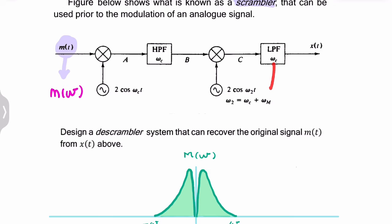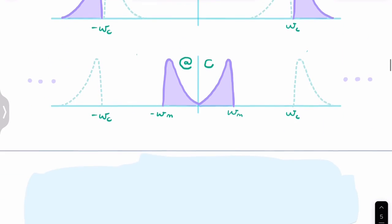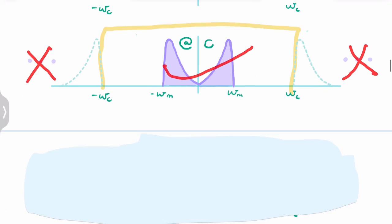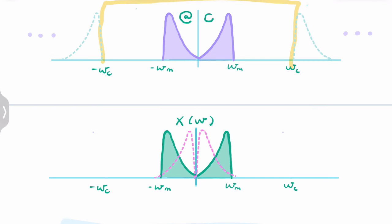After the low-pass filter with a cutoff frequency of ωc, the higher frequency components will be blocked. What will remain will be the bits between minus ωₘ and ωₘ. We'll end up with a band-limited baseband signal that's a scrambled version of the original. The original looked like that, but after scrambling it looks like that.